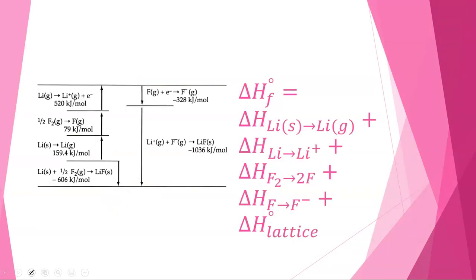In order to determine any of the enthalpies of a specific step, we're going to use Hess's law. Remember Hess's law says that for any state function, which the formation of an ionic solid is, the total energy change, the total enthalpy change, is equal to the sum of the enthalpy changes of each of the steps. And so in this figure, it's the same process, just a little smaller graphic.